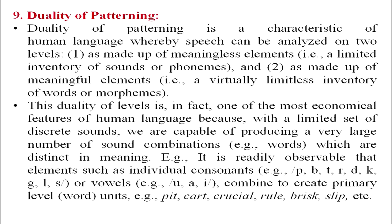Duality of patterning is one of the most economical features of human language. With a limited set of discrete sounds, we can produce a very large number of distinct sound combinations — that is, words. For example, from meaningless elements like pa, ba, ta, ra, da, ka, ga, la, sa, and vowels oo, aa, ee, we can combine them to create meaningful word units like pit, cart, crucial, rule, brisk, and slip.